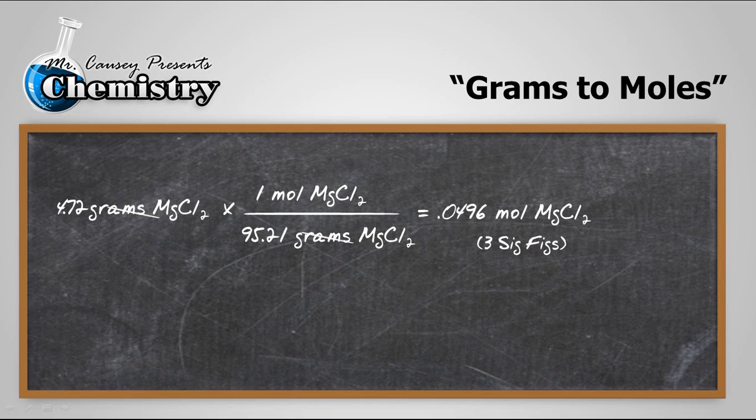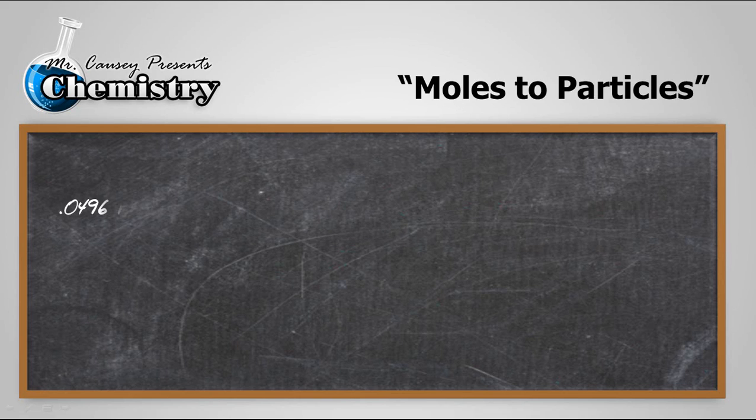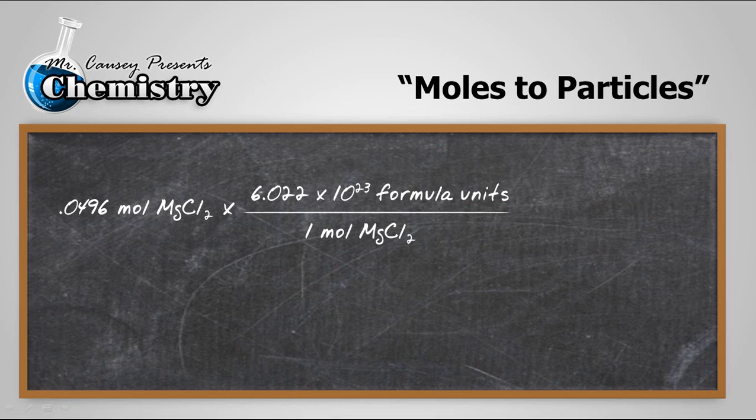Next step is to change moles to particles. So let's take 0.0496 moles magnesium chloride and multiply it by the number of formula units in a mole, and the number of any particle in a mole is 6.022 times 10 to the 23. All right, and if you're having trouble with the mole idea, I've got a couple of videos, go back and watch them, but that's really all a mole is.